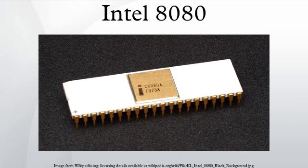The following 8080/8085 assembler source code is for a subroutine named MEMCPY that copies a block of data bytes of a given size from one location to another. The data block is copied one byte at a time, and the data movement and looping logic utilizes 16-bit operations.